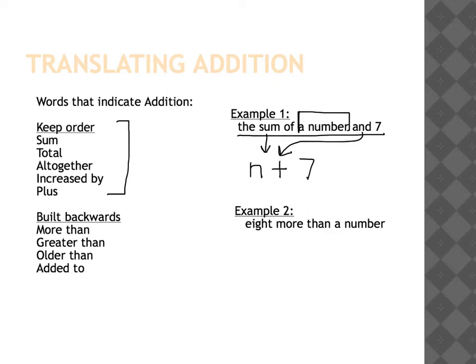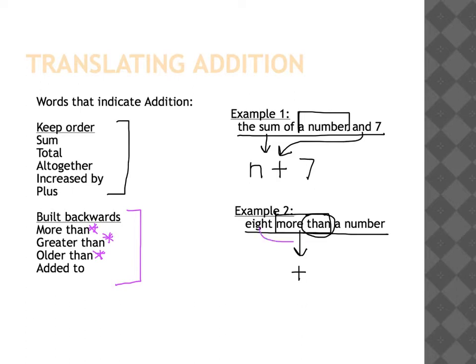Then we have types of words that change order, or are built backwards. I always tell my students: if you see the word 'than' or 'from,' you actually need to write it backwards. So if we have 'eight more than a number,' when you see 'more than,' you should think addition. But because of the word 'than,' it's built backwards — the eight goes behind the addition symbol, and the number, which we represent with a variable, goes in front.